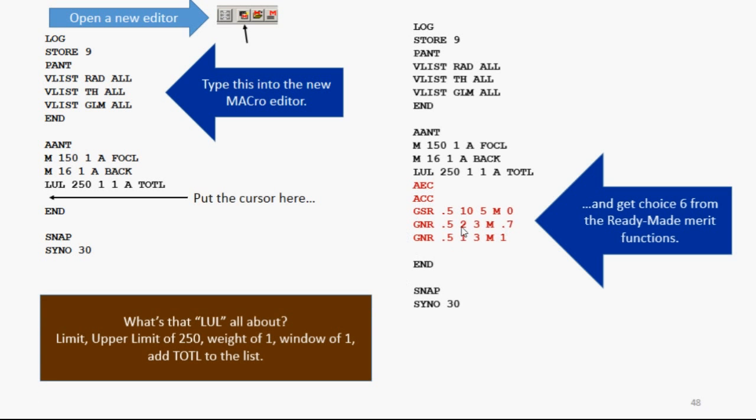Now what was that LUL all about? Well, it means limit, upper limit of 250, with a weight of 1 and a window of 1. And you're going to control the total length. That's vertex to vertex, front to back. This is a one-sided aberration. That is, the total length can get smaller, but it can't get larger. These are very useful. You can have an upper limit and a lower limit on an aberration. Very handy.